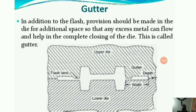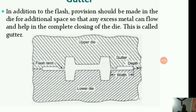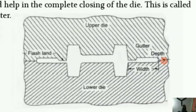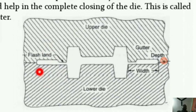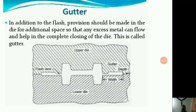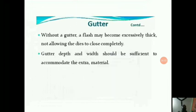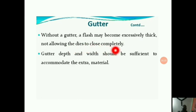Gutter is an addition to the flash. Provision should be made in the die for additional space so that any excess metal can flow and help in the complete closing of the die — this is called the gutter. In closed die forging, the upper and lower die completely close the workpiece. The gutter is provided so that excess material can flow. Without the gutter, flash may become excessively thick and not allow the dies to close completely. Gutter depth and width should be sufficient to accommodate the extra material.